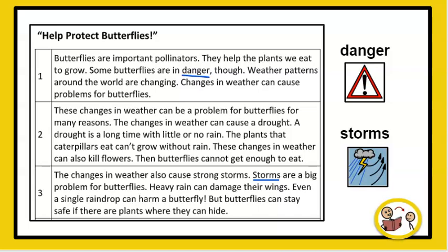The changes in weather also cause strong storms. Storms are a big problem for butterflies. Heavy rain can damage their wings. Even a single drop can harm a butterfly. But, butterflies can stay safe if there are plants where they can hide.